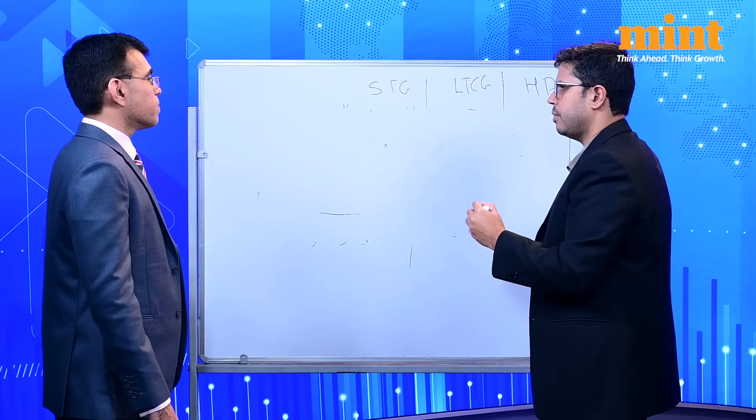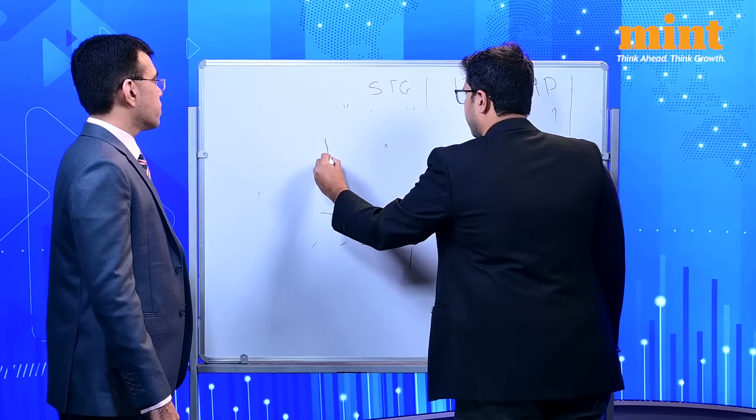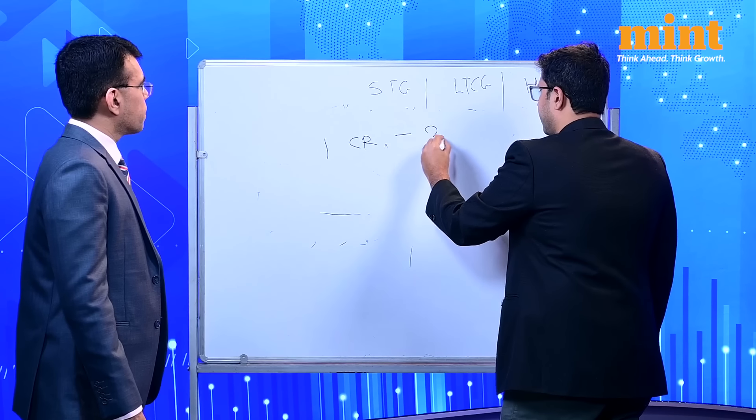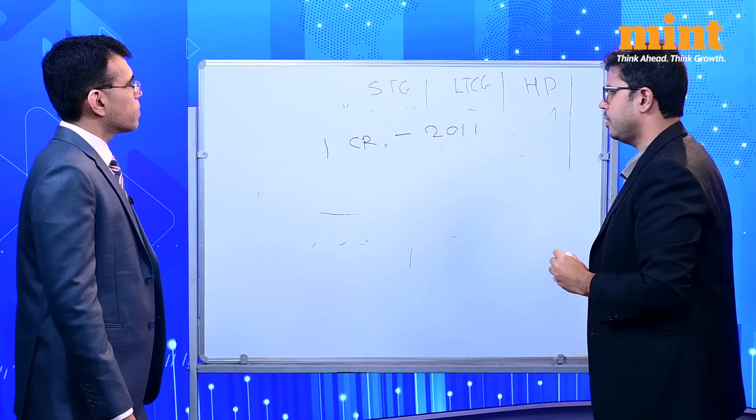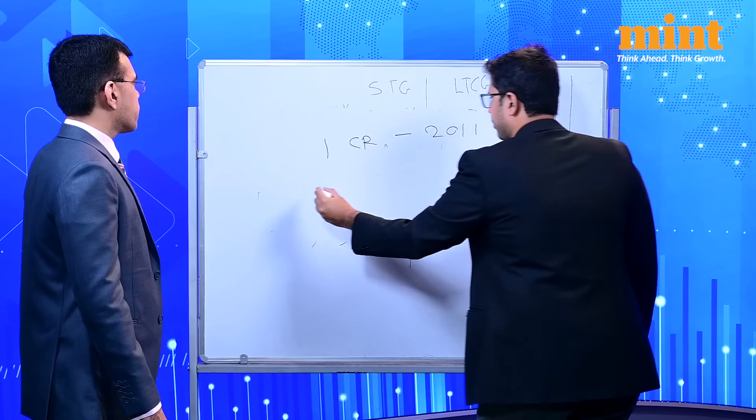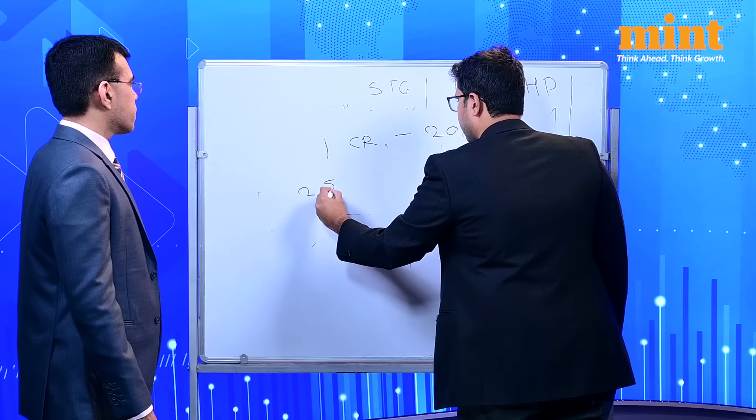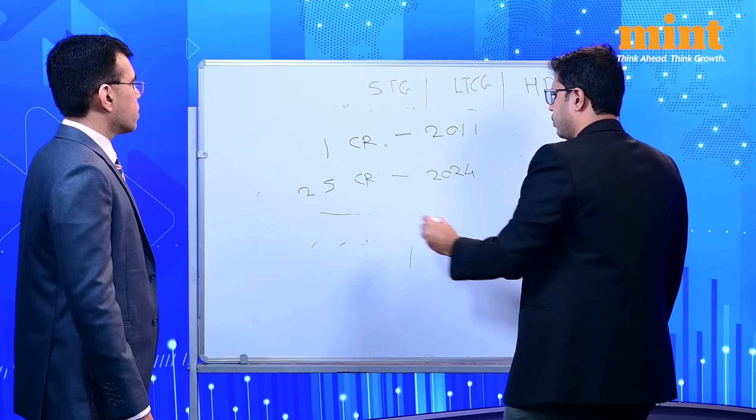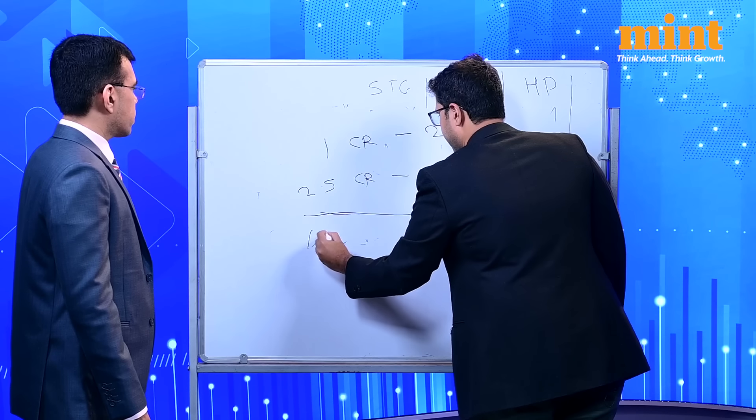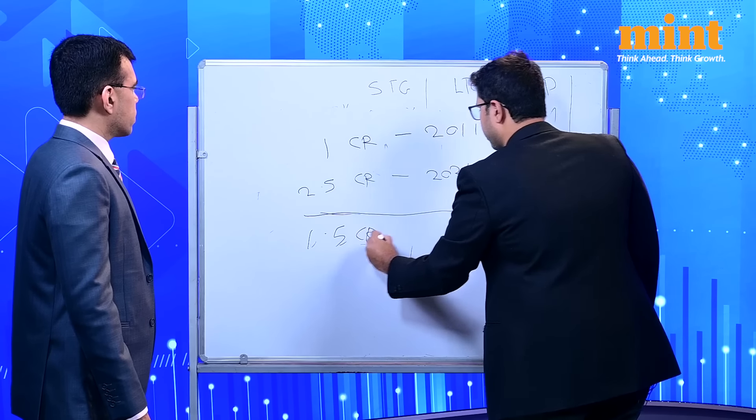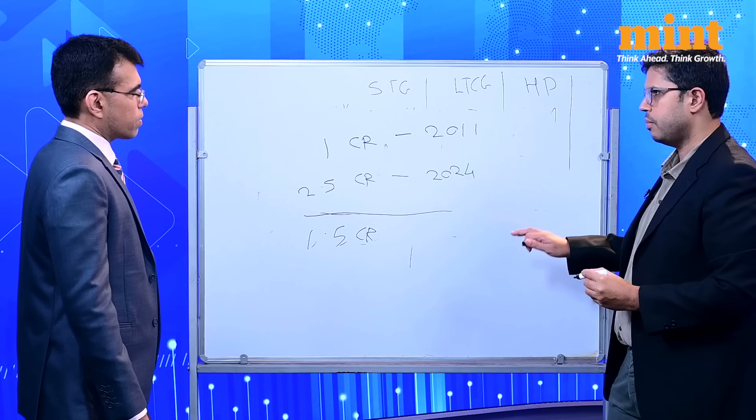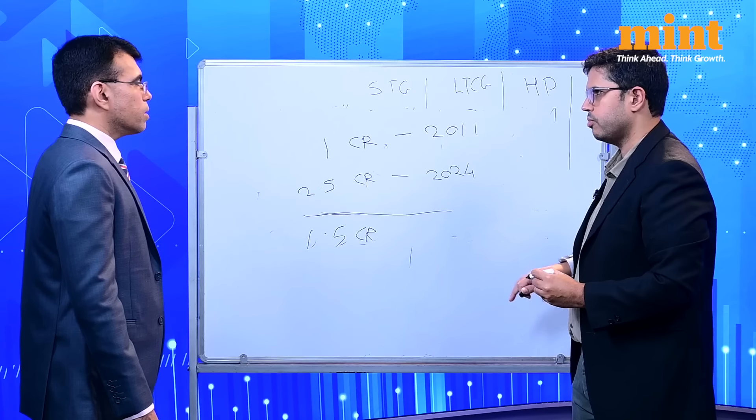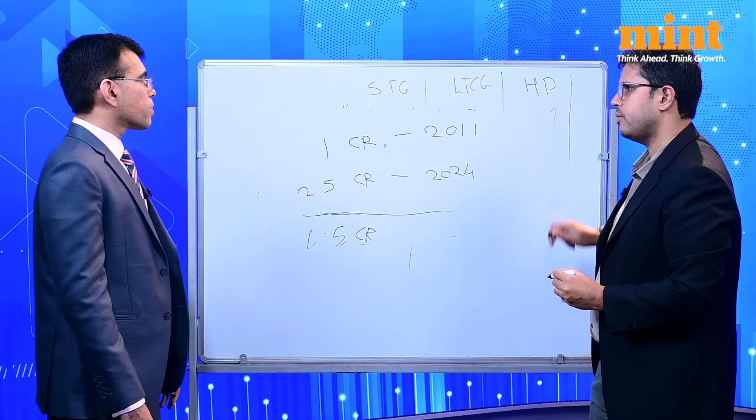So Karan, let us assume that my house I have bought for 1 crore. I have bought this in 2011. And I sell it this year for 2.5 crores. In 2024. So my gain is 1.5 crores. Now earlier I would have been taxed on this at 20% but with indexation. So it would not have been 20% of 1.5 but 20% of whatever the indexed value. So typically what would the index value of 1 crore be?